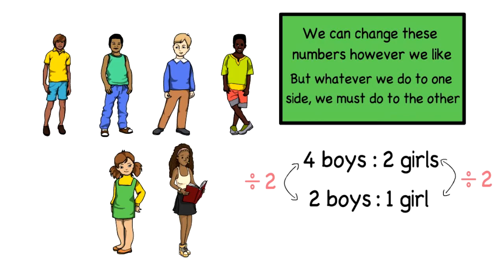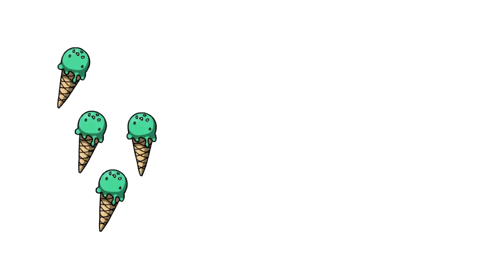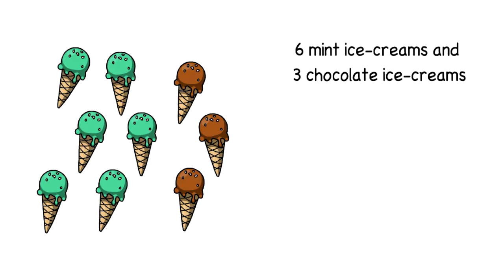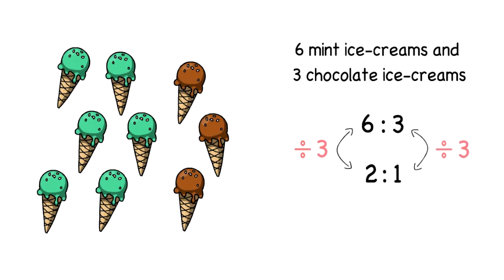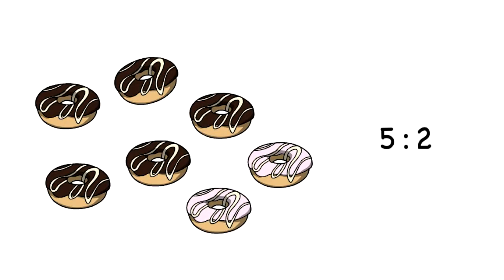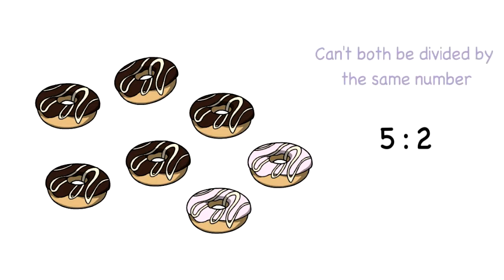So even though I have four boys and two girls in front of me, the actual ratio will be two to one. Here I've got six mint ice creams and three chocolate ice creams. I can divide both of these by three, so the ratio is two to one. If you can't divide both numbers by the same thing, then it can't be simplified.